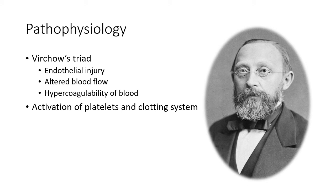Coming to pathophysiology: Virchow described three primary events which predispose to thrombus formation — the famous Virchow's triad: (1) endothelial injury, (2) altered blood flow, and (3) hypercoagulability of blood. To these are added two processes which follow: activation of platelets and activation of the clotting system. So five factors in total come into play.